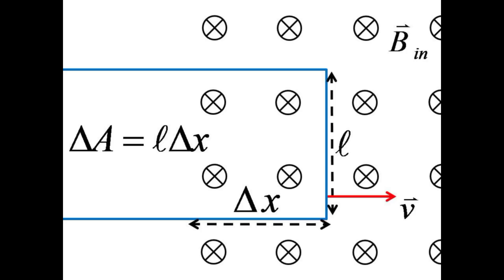If the short side of the rectangle has length L and the loop has entered the field to a distance delta x, the area for flux calculations is the product of L times delta x.